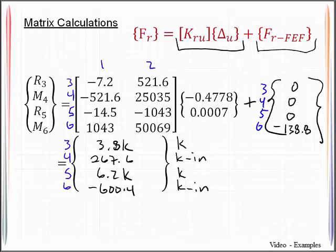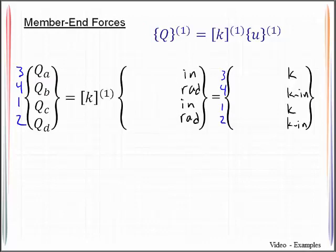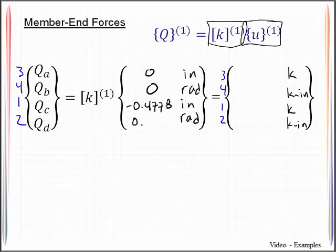With the joint displacements and the reactions calculated, I then need to move on to getting the member end forces. And the basic operation there will require the local element stiffness matrix and the end displacements for that particular element. So we get 0 and 0. We read this off of our displacement vectors that we had before. So we have 0, negative 0.4778, and 0.0007 radians. This produces these member end forces of 3.84 kips, 267.6 kip inches, negative 3.84 kips, and 286.0 kip inches. So member number 1 is pretty straightforward.